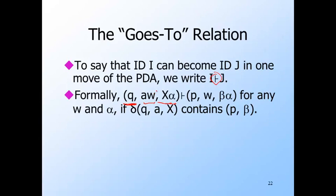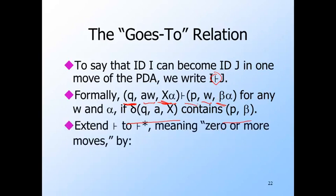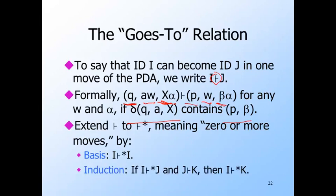Suppose the first ID has state Q, input AW (where A is either the first symbol or epsilon used for the next move), and stack X alpha (where X is the top symbol and alpha is everything below). Suppose delta of Q, A, X contains P beta. Then a possible next ID has state P, W remaining on the input because A got consumed, and beta alpha on the stack, where X got replaced by beta. We also have a goes-to-star relation for IDs: the basis says any ID goes to star itself, and for the induction, if I goes to J by some number of moves and J goes to K by one move, then I goes to K by some number of moves.